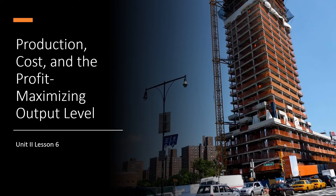Here we are — we're in Unit 2 still. This is Lesson 6. We're still in the broader idea of supply, and this is wrapping up the idea of supply in the production process. Entrepreneurs bring together capital, labor, and land to produce goods and services. To build a skyscraper, cranes and construction workers join forces on a patch of land. To make a latte, an espresso machine, a barista, and coffee beans intermingle with piping hot water to form a caffeinated beverage.